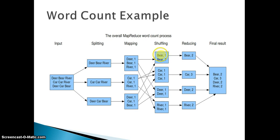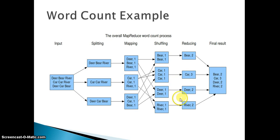Concentrating on sorting first — sorting on key. That is the reason why we have bear comma one in the first place, second place we have car comma one, third place we have deer comma one, and fourth place we have river comma one. This is a lexical alphabetical sort on the keys of the mapper output. Once we get this, we have the shuffle phase. Shuffling means similar words will go to a single reducer. So all the bear comma ones will go to one reducer, car comma ones will go to one reducer, deer comma ones will go to one reducer, and river comma ones will go to one reducer.